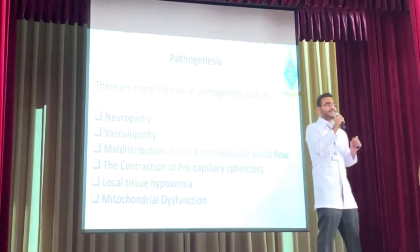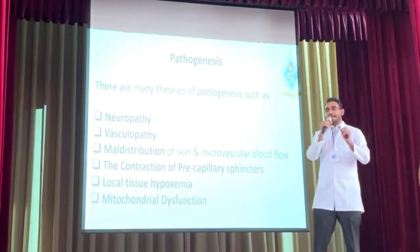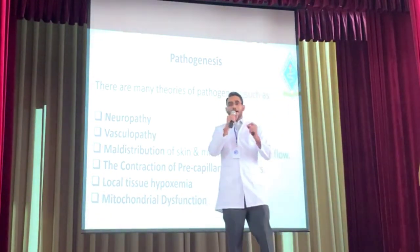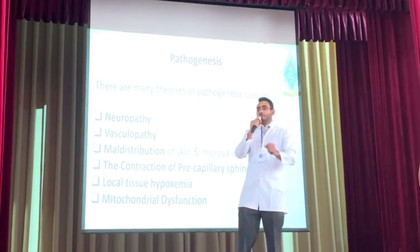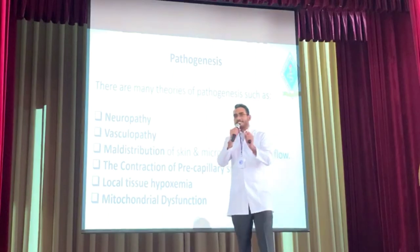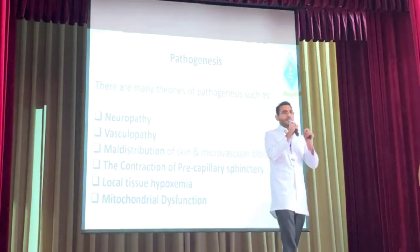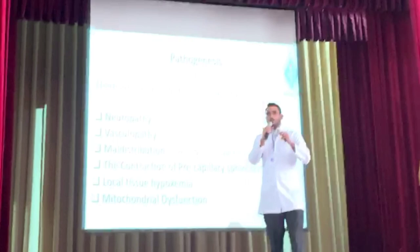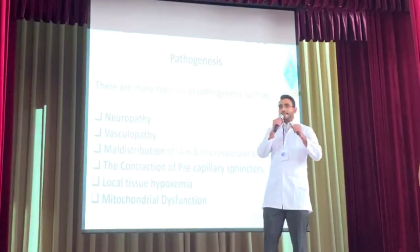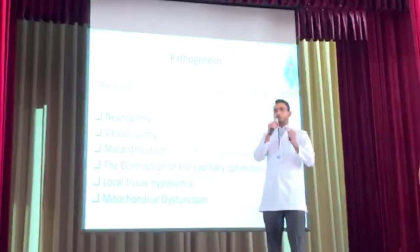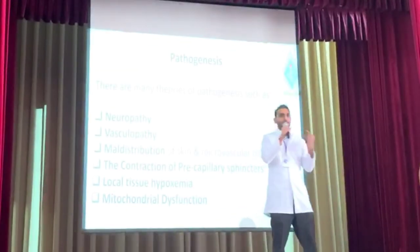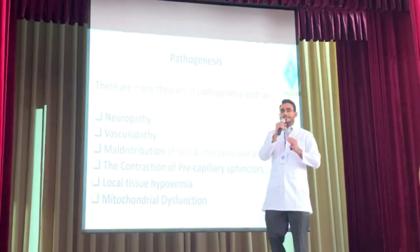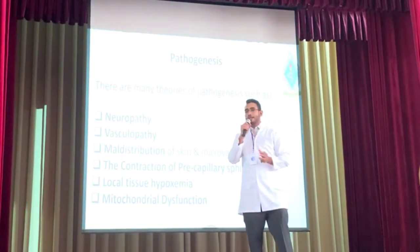Due to erythrocytosis, the red blood cell volume is high, meaning the hematocrit volume is high, which is favorable to viscosity. Due to viscosity and platelet aggregation, blood will take more time to reach the tissue and deliver nutrition. When there is a low level of nutrition, it causes ischemia.